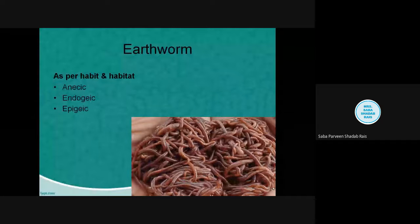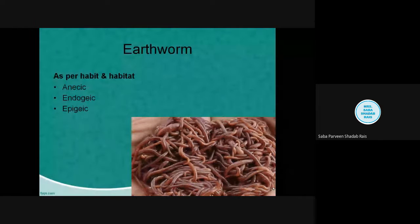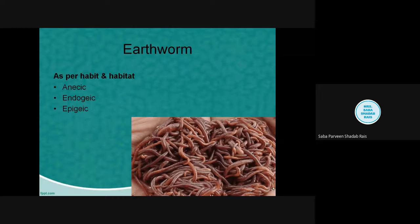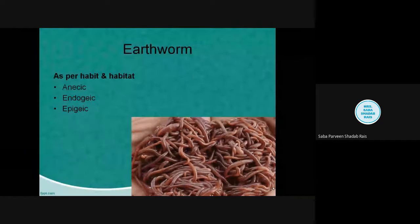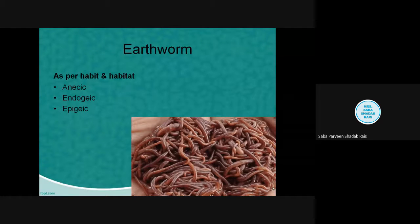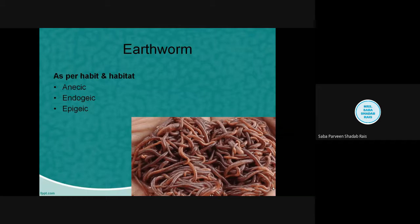The next category is epigeic — meaning 'upon the earth.' These worms live in the surface litter and feed on decaying organic matter. They do not have permanent burrows and stay on the surface, so they are responsible for decomposing material. These are used in vermicomposting. Examples include Lumbricus rubellus, Dendrobina, Octadida, Dendrobina atemsi, Dendrodinus rubidus, and Eisenia fetida. These are the earthworms used for vermicomposting.